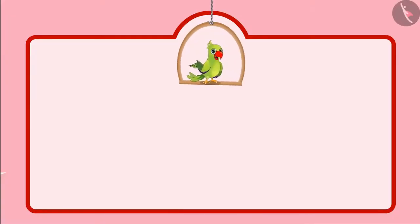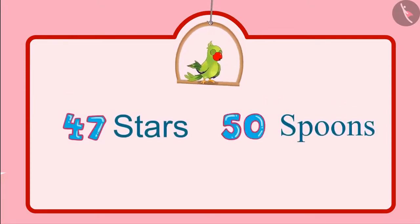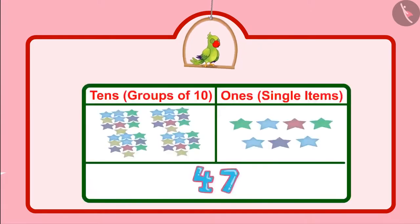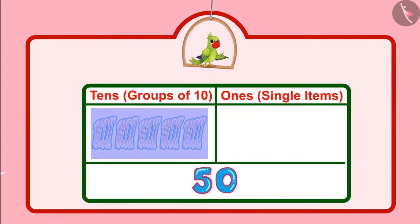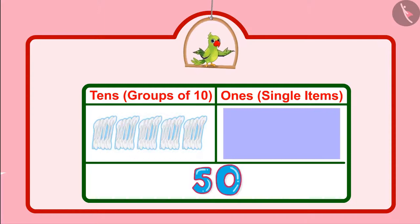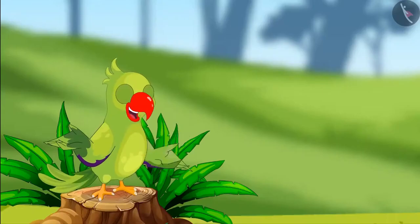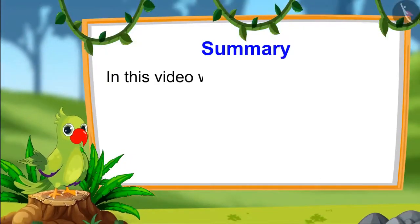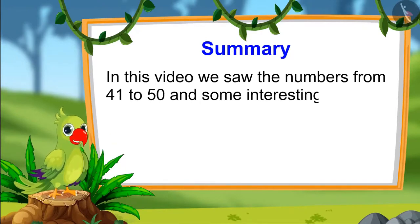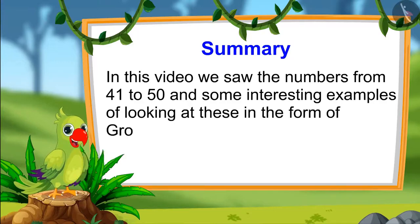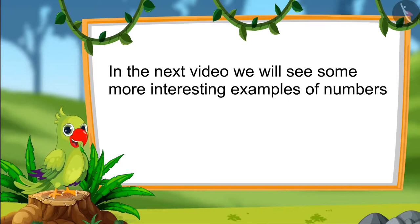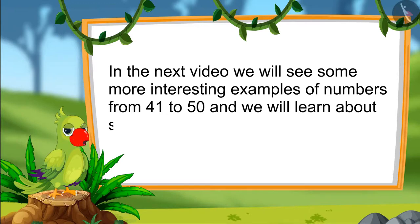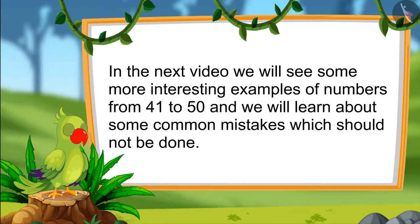Children, you just saw that Pinky and Chotu had 47 stars and 50 spoons. Can you tell how many groups of 10 and how many single units are there in these? There are 4 groups of 10 and 7 single units in 47, and there are 5 groups of 10 in 50 with 0 single units. Children, so that's it for today. In this video, we saw numbers from 41 to 50. In the next video, we will see more interesting examples and learn about common mistakes. Till then, bye children.